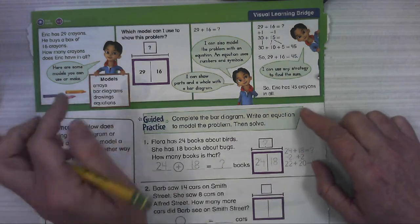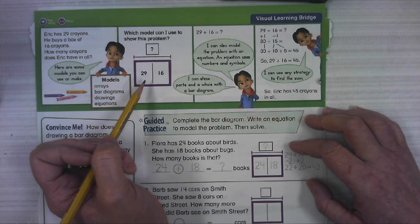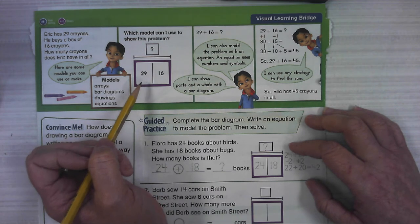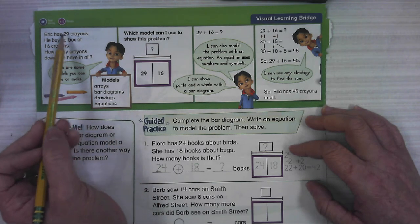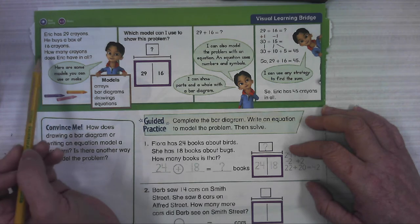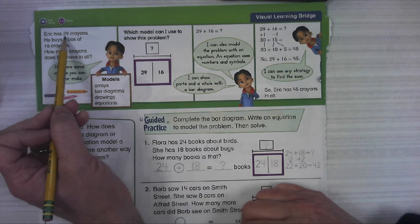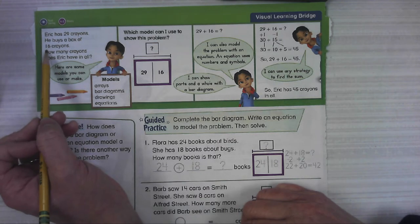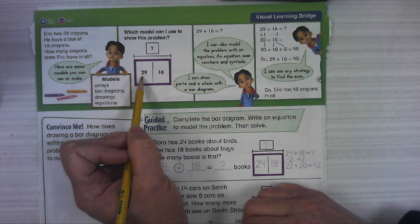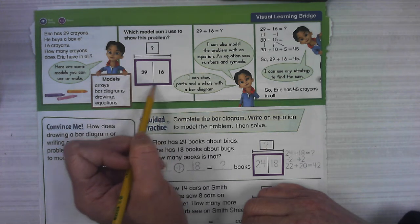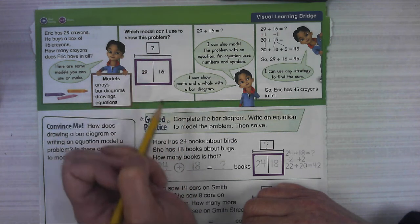All right, this is walking through another one with Eric. I will explain this but again if this doesn't make a bunch of sense to you then let's not worry about that. Eric has some crayons. He buys a box of some crayons. How many crayons does Eric have in all? We're gonna put those together. So Eric has 29 crayons and then he buys a box of 16 more. They have the bar has 29 and 16. Those are the two parts that we're putting together and the whole thing we're gonna have to add to find out what the whole thing is.